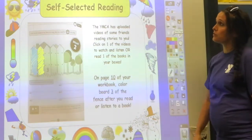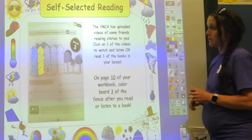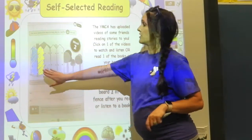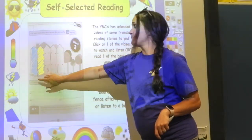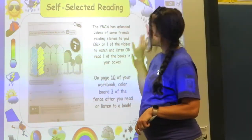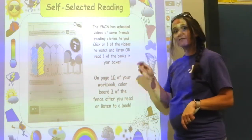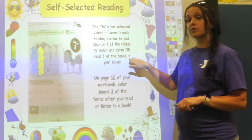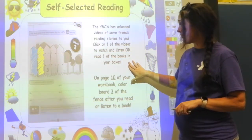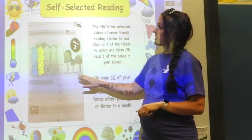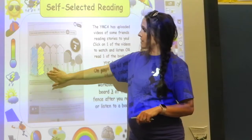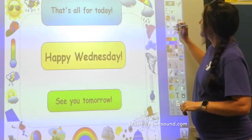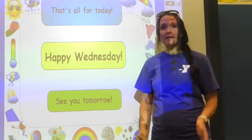The last thing we're going to do for the day is self-selected reading. Remember on Monday and Tuesday you watched a video or read a book from your bag and then colored your fence posts. Today is day three. Go onto the YouTube site, find a video of a friend reading a book, or get one of your books out of your bag and read to yourself. When you're finished, go back and color number three. Okay, that's all for today — happy Wednesday, we'll see you tomorrow!